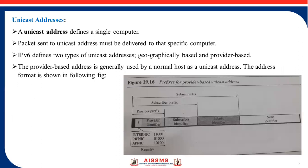Next are the different types of addresses. There are various types of addresses. The first one is unicast address. A unicast address defines a single computer — a packet sent to a unicast address must be delivered to that specific computer only. IPv6 defines two types of unicast address: one is geographically based and the second one is provider based. This diagram shows the provider-based unicast address.